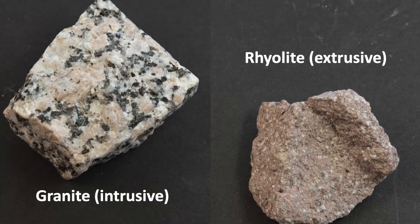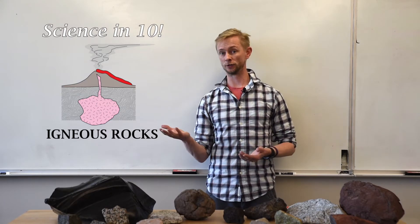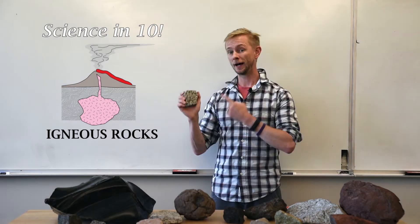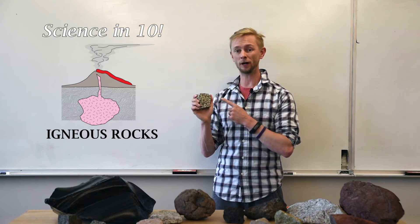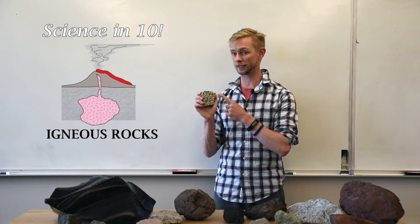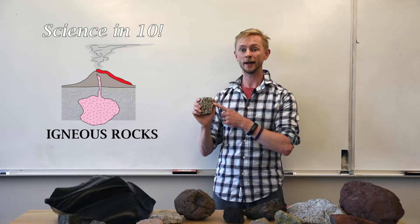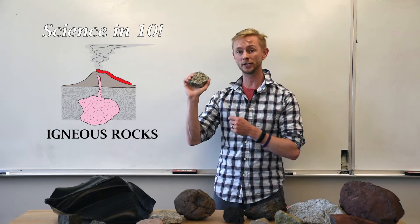For example, a rhyolite and a granite are both felsic — both have the same composition — but the granite is intrusive and the rhyolite is extrusive. So how do we determine intrusive versus extrusive? The primary way is to interpret the rock's texture, which is defined as the size and arrangement of the crystals within the rock. This texture is a direct result of the processes that form the rock and records the cooling and crystallization history of that particular rock.